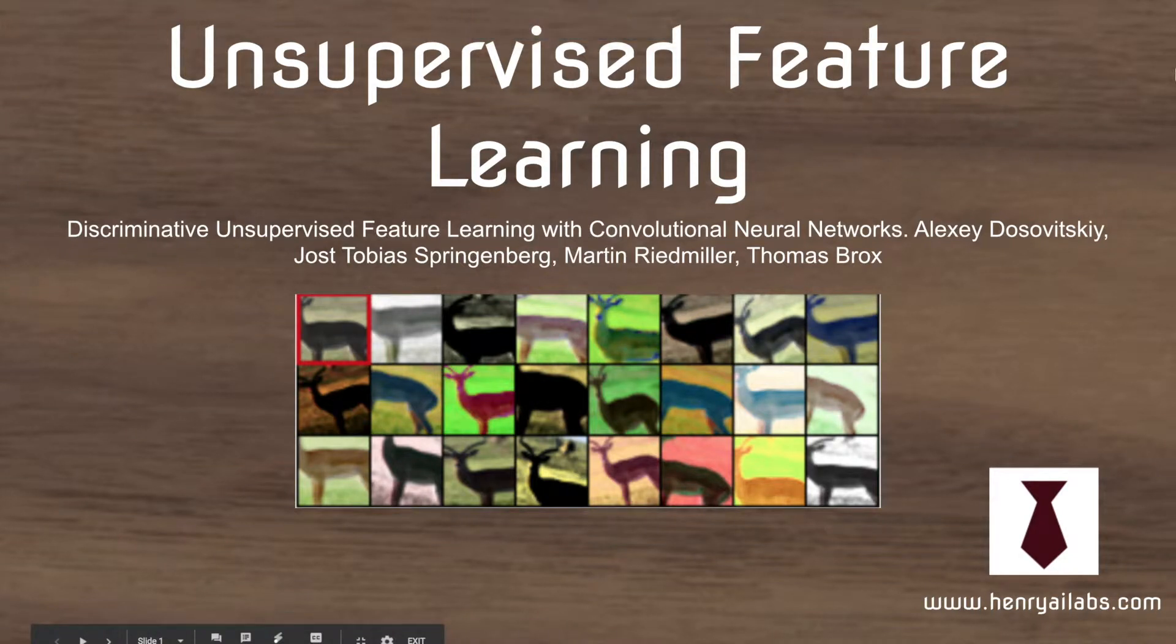This is a deep learning video on unsupervised feature learning from Henry AI Labs. This paper is going to show how they can make these auxiliary classes, which are also known as exemplar classes, by augmenting images and then having the multi-class classifier predict the augmented classes.